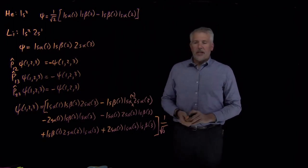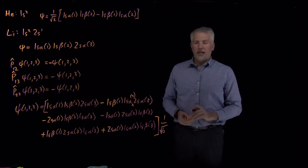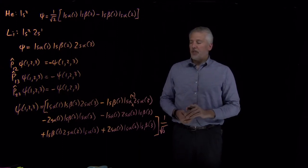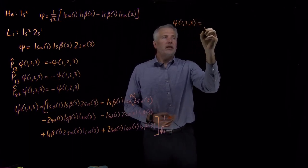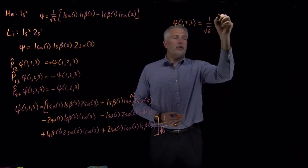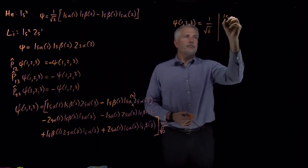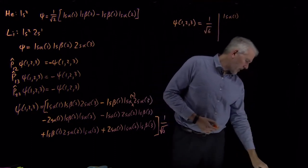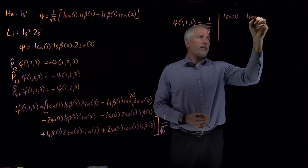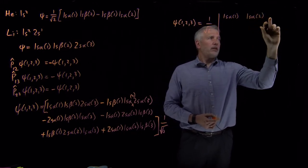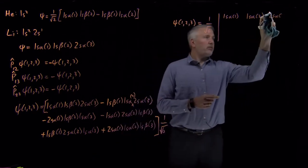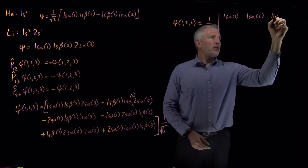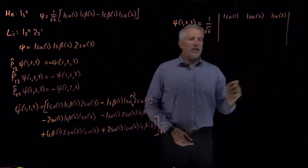There's a much easier way of writing down one of these anti-symmetrized, normalized wave functions without going through this process of writing down every possible combination and changing signs. If you've had a course in linear algebra, you can get the result by taking a determinant. This should be 1s alpha(3).